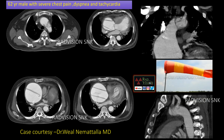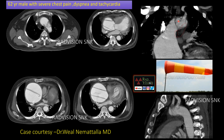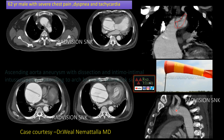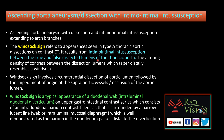The windsock is mostly seen at airports, helping pilots assess wind direction for safe landing. Here, the windsock sign represents intimo-intimal intussusception extending into the branches, including the left common carotid and left subclavian arteries. Remember the windsock sign: it is seen in intimal intussusception between the true and false lumen; additionally, the windsock sign can also refer to the typical appearance of a duodenal web, i.e., intraluminal duodenal diverticulum. This is a case of ascending aortic aneurysm with dissection, Stanford Type A and DeBakey Type 2, with classical intimo-intimal intussusception — the windsock sign.